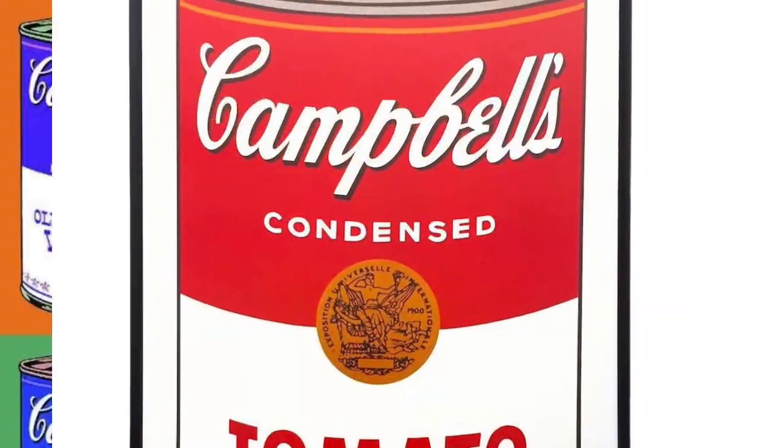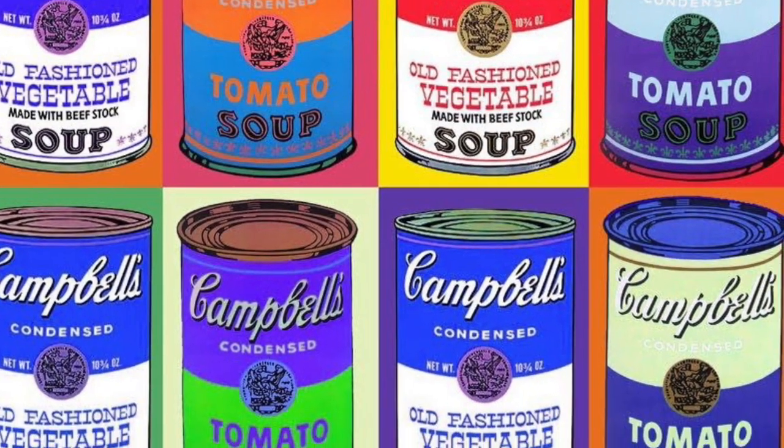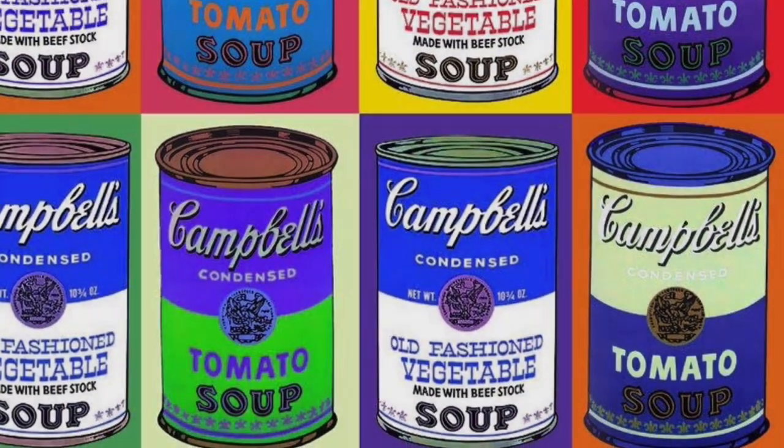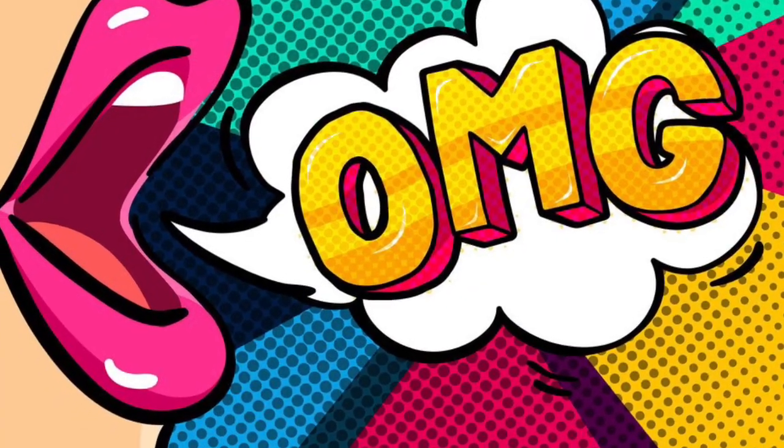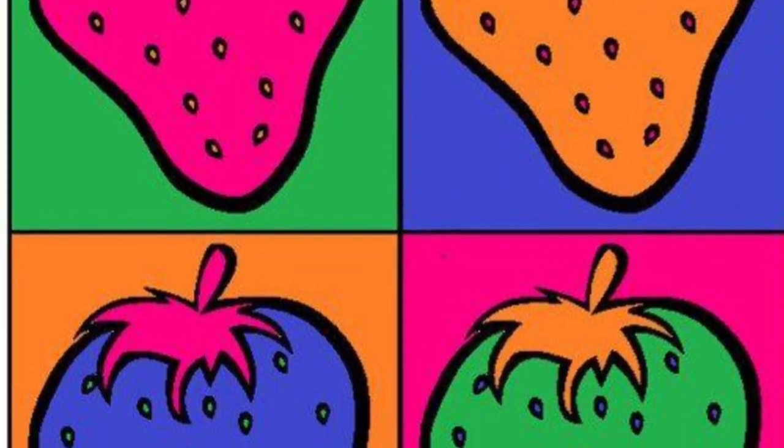Andy Warhol painted this soup can that he saw at a grocery store, and then he changed the colors to see what colors look good next to each other. Complementary colors are two colors that are opposite of each other. And when put next to each other in art, the colors pop out.